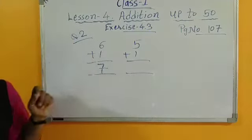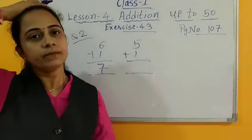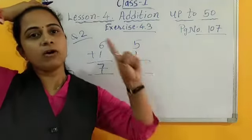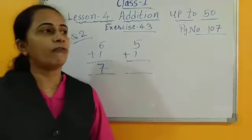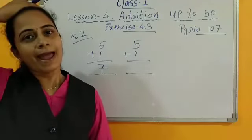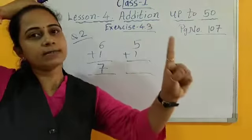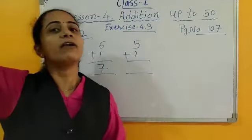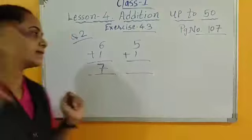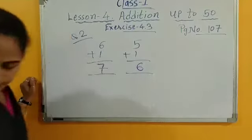Then next 5 plus 1. So again 5, keep it in your mind. And how many numbers add? Only 1. So 5 and add only 1. So after 5, which number? 6. Yes. After 5, 6. So here 6.